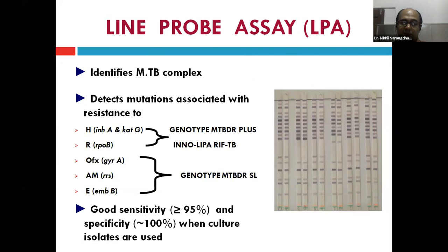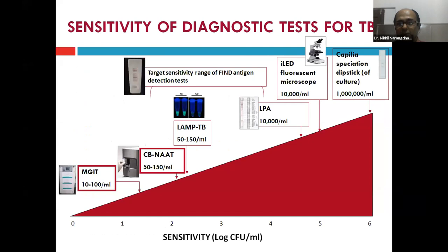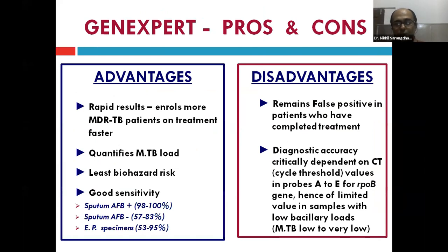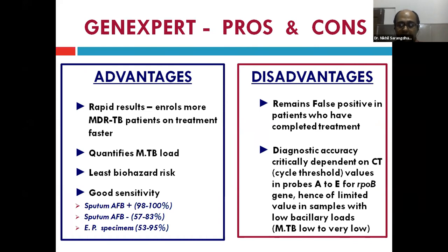LPA has good sensitivity and specificity particularly when culture isolates are used and are positive. The diagnostic pyramid shows liquid culture at the bottom with highest sensitivity, followed by CB-NAAT and then LPA. GeneXpert has revolutionized rapid diagnosis and treatment of both drug-sensitive and drug-resistant TB. Advantages: it enrolls more MDR-TB patients on treatment faster, detects RIF resistance as a surrogate marker of MDR-TB, quantifies MTB load as very low/low/medium/high, has the least biohazard risk of all genotypic tests, and has good sensitivity for smear-negative and extrapulmonary samples.